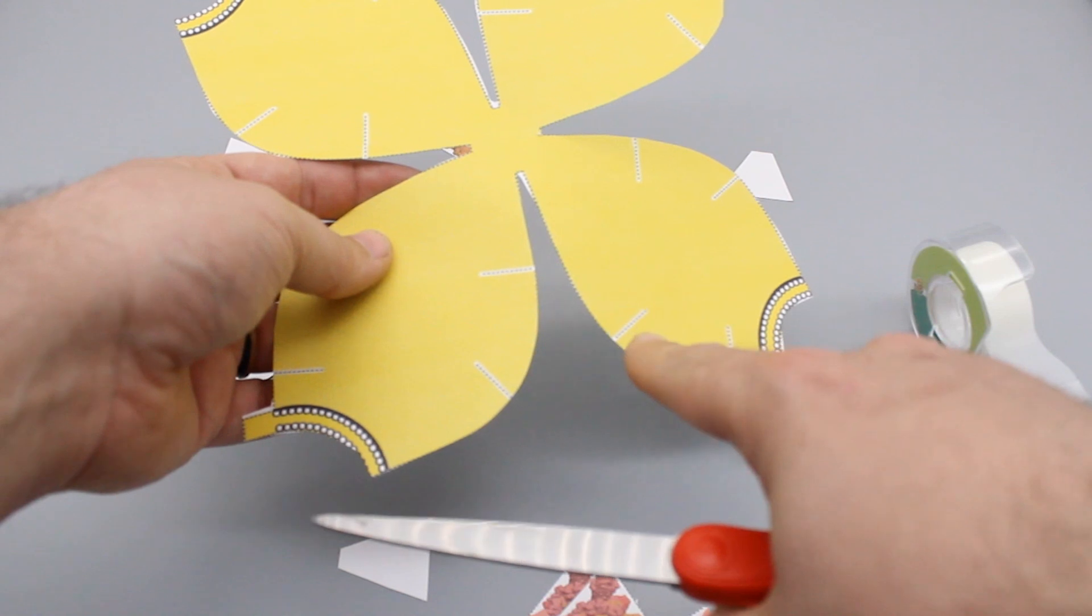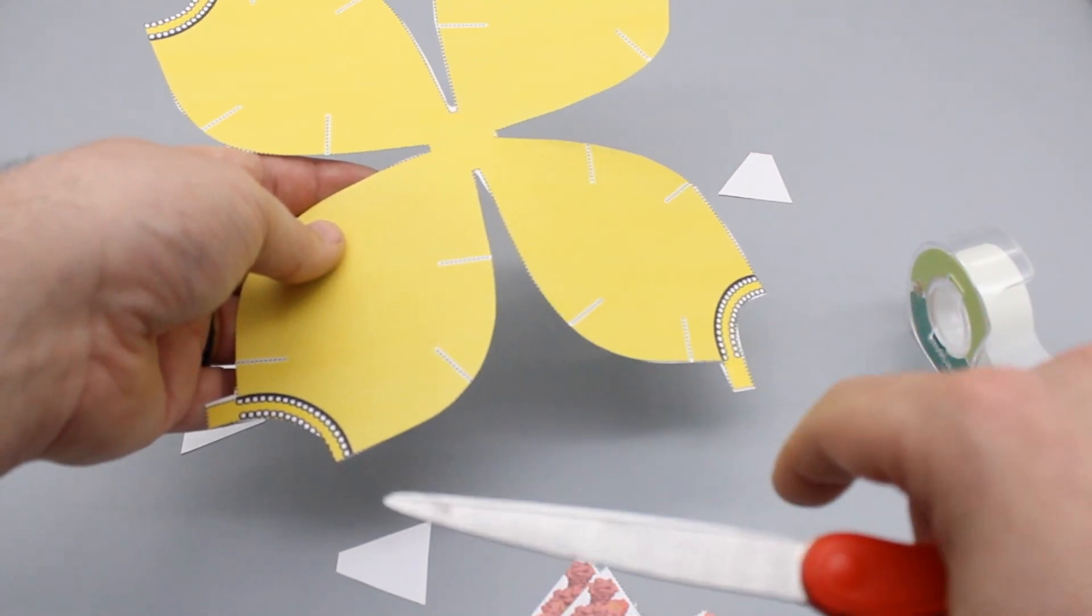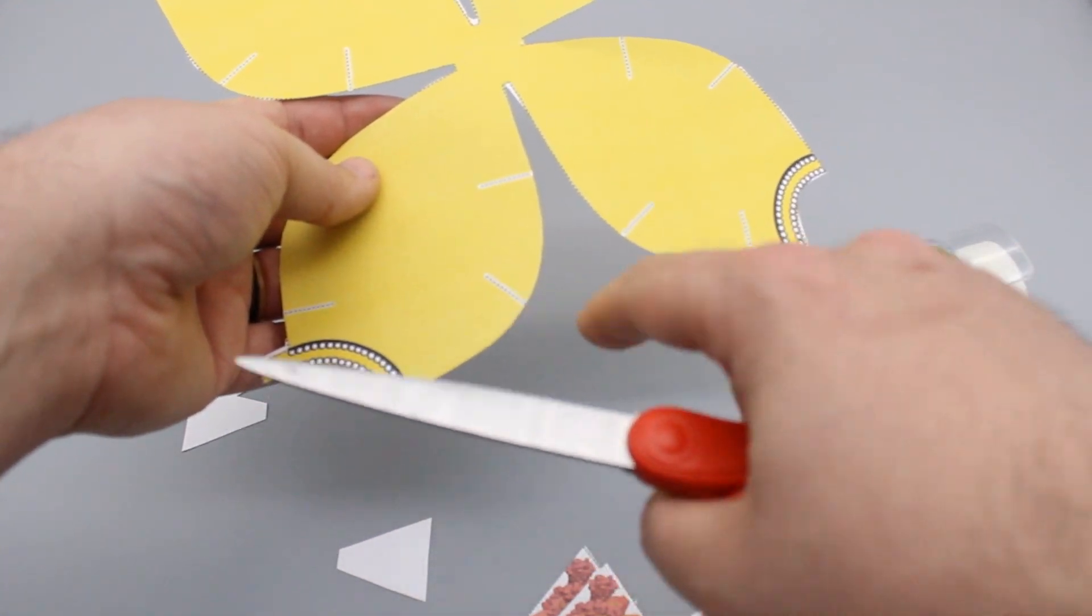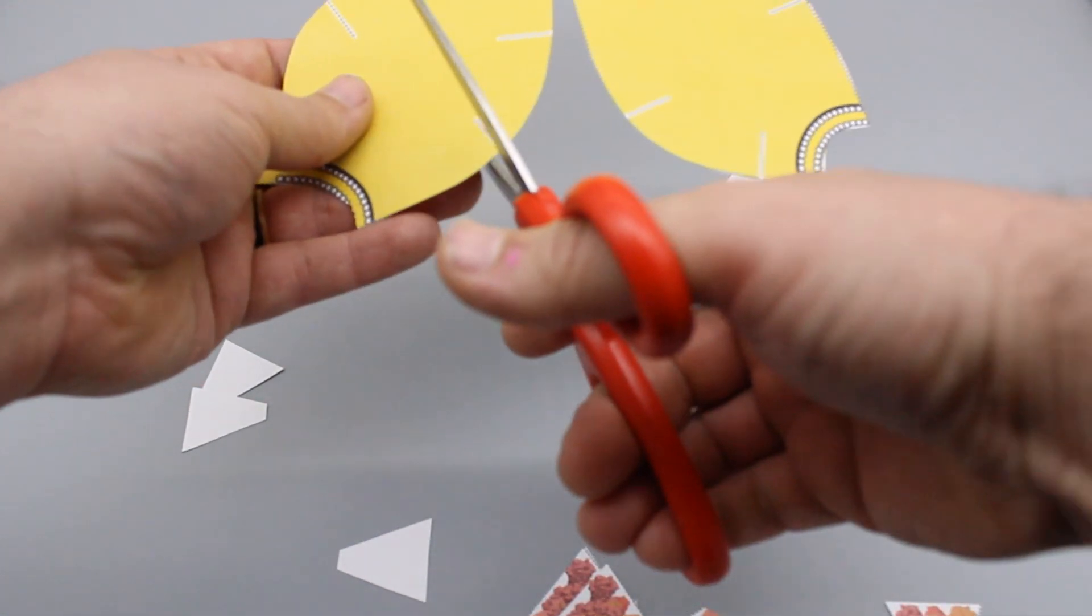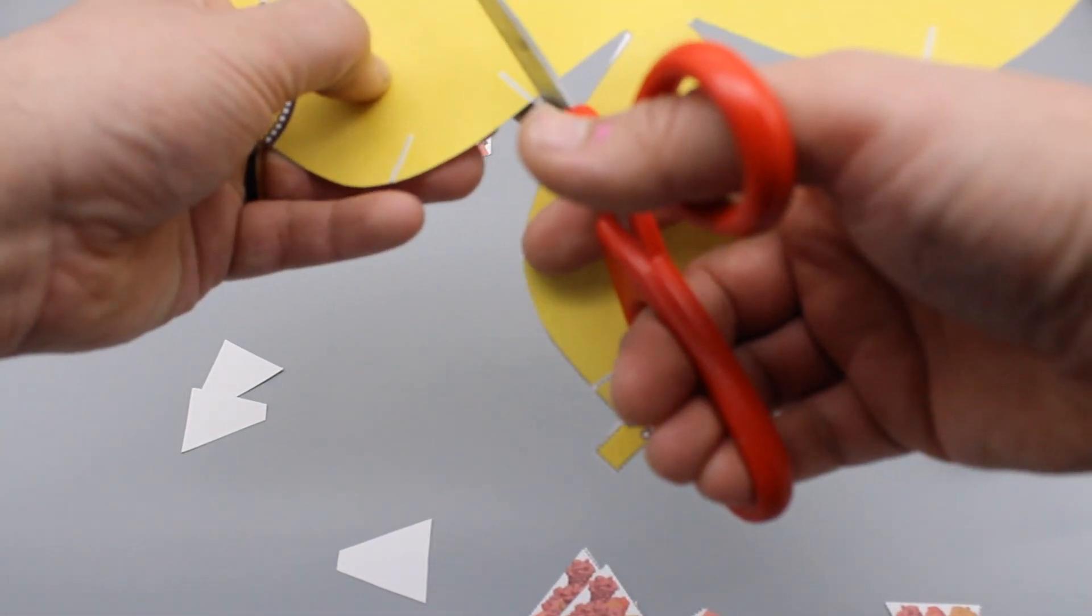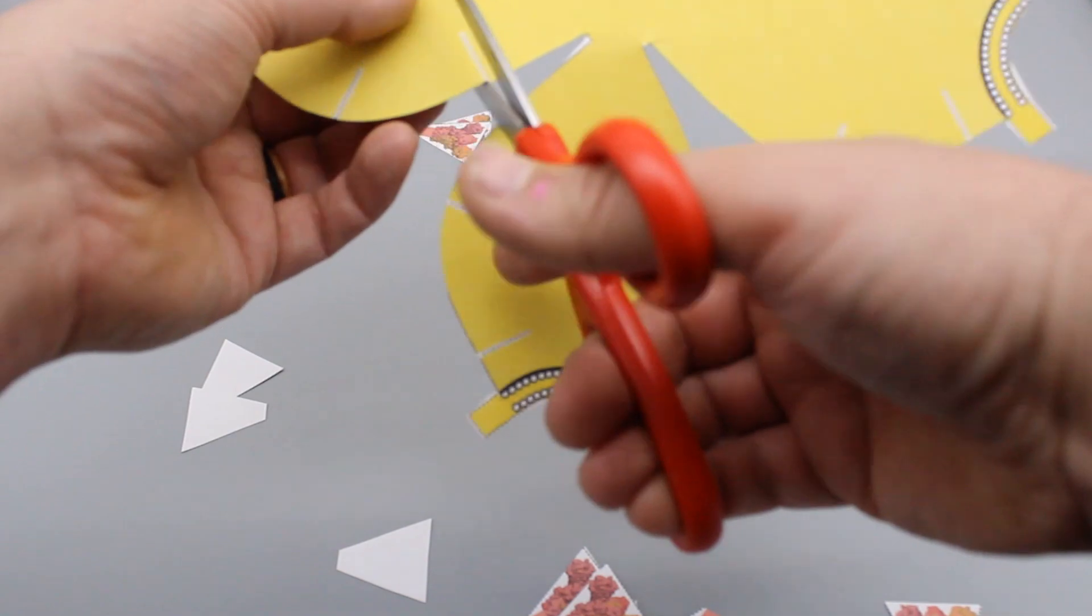Notice that on the yellow piece there are some additional dashed lines that go kind of into the main parts of these four sides. You just gently take your scissors and cut each of those, putting a small slit or cut into the yellow piece of this virus model.